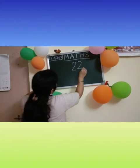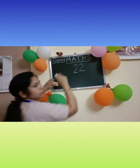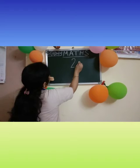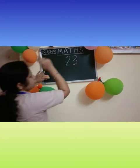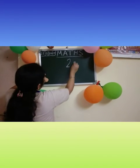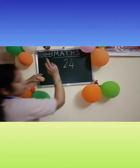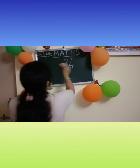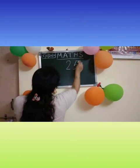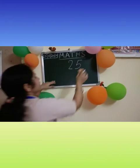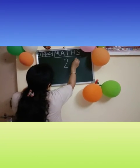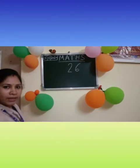2 and 2, 2, 2, 22. 2 and 3, 2, 3, 23. 2 and 4, 2, 4, 24. 2 and 5, 2, 5, 25. Now repeat children. Now next number 2 and 6, 2, 6, 26.